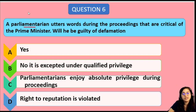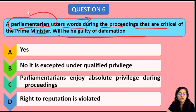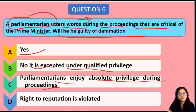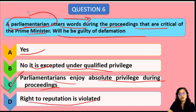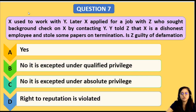Next question: A Parliamentarian utters words during parliamentary proceedings that are critical of the Prime Minister. Will he be guilty of defamation? Parliamentarians enjoy absolute privilege during the proceedings, granted by the Constitution, to speak anything during parliamentary proceedings. The answer is option C. Do let me know in the comment section which article covers this — we have already studied it in the revision series for Constitution.